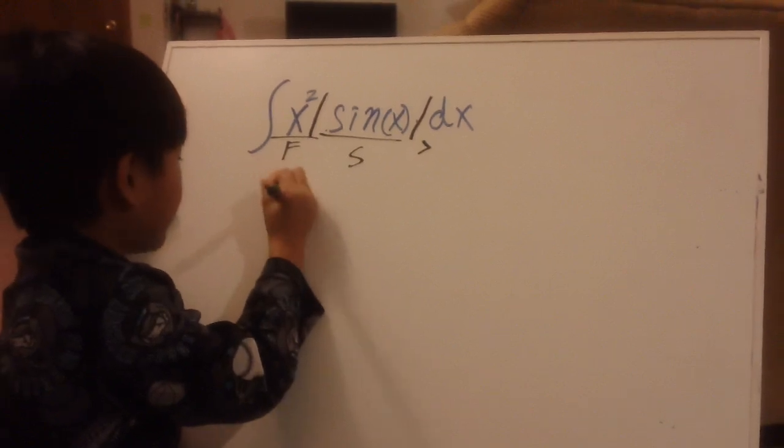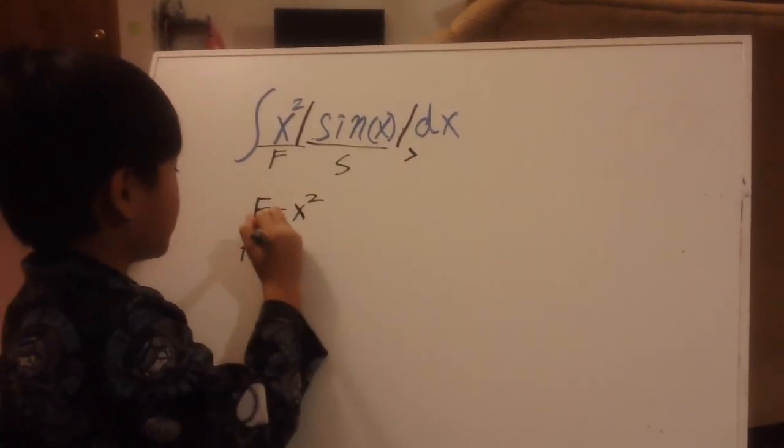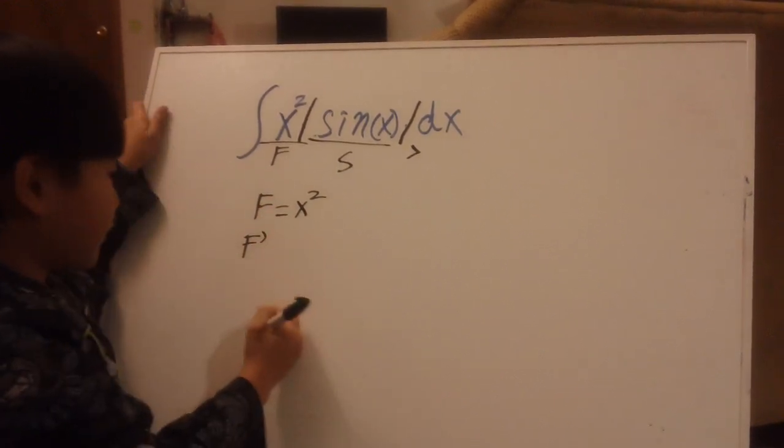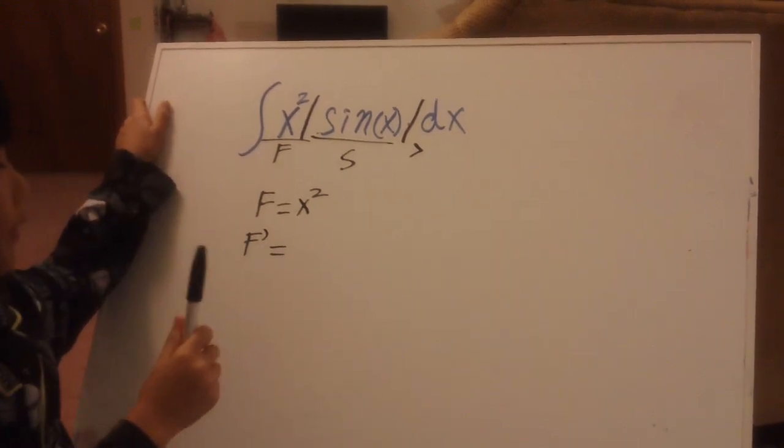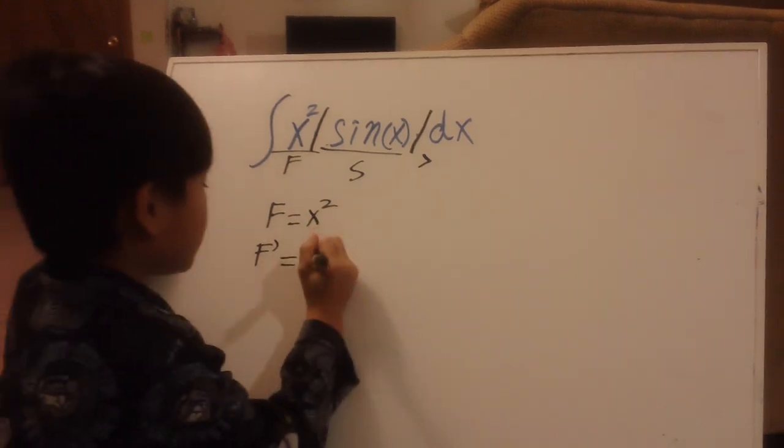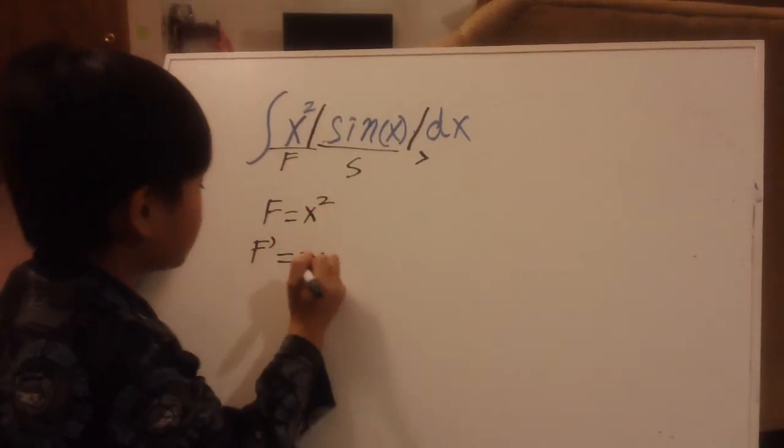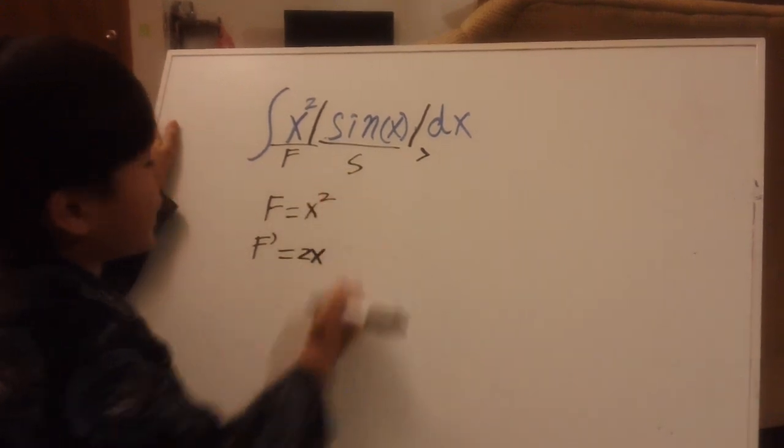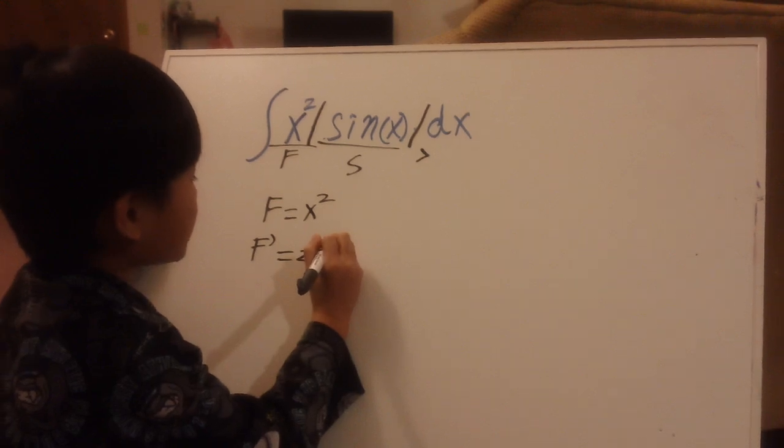So then F equals, you copy it down, x². So then you put F down, it goes down. I have a rule called go down, count down. So you copy the x², you put it here, so now it's 2x. And then the power, it counts down. So then 2, count one down, is 1.